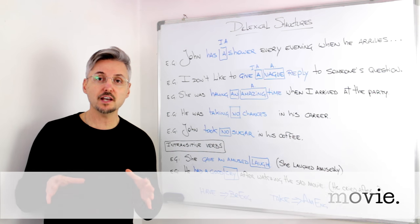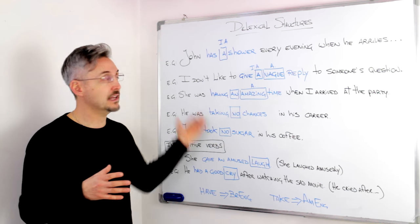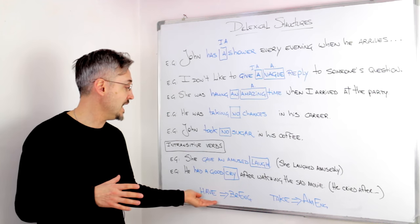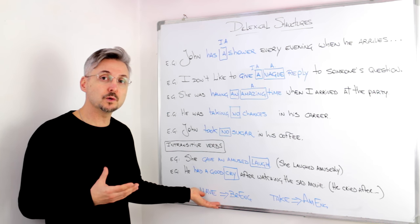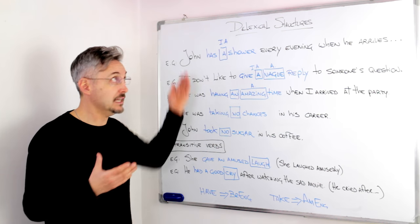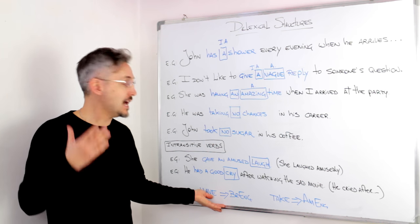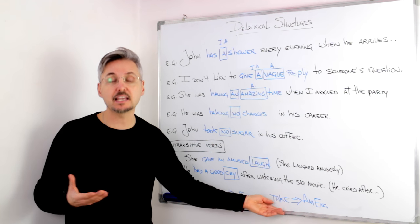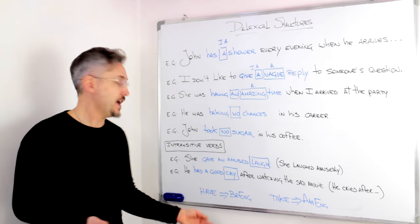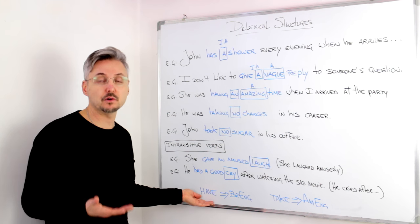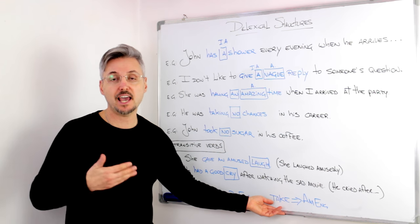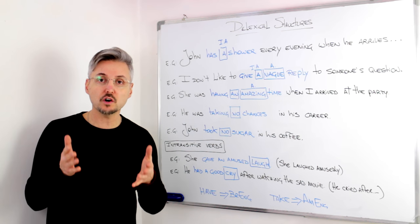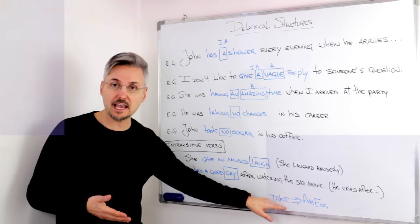Another thing that I wanted to tell you about the lexical structures is that in British English, they prefer to use have in the lexical structure as opposed to take in American English. So, have a shower, for example. Have a shower. In American English, take a shower. But it's your choice to use either have or take.